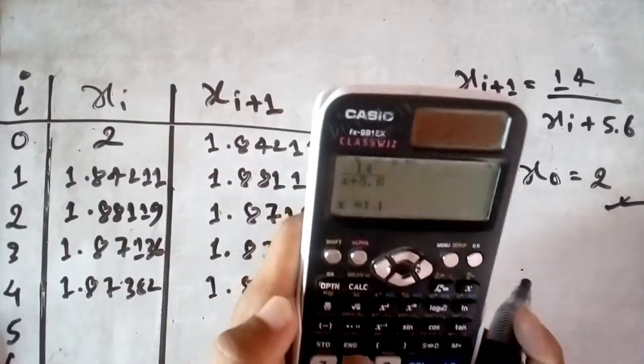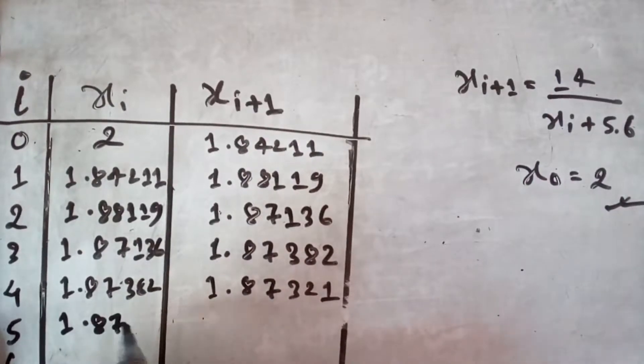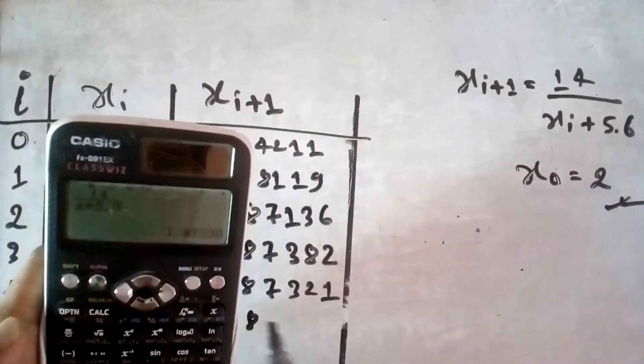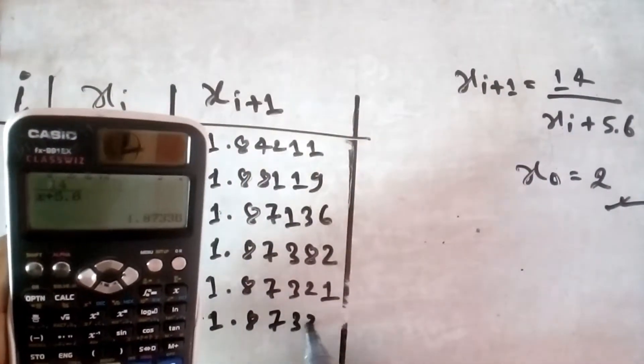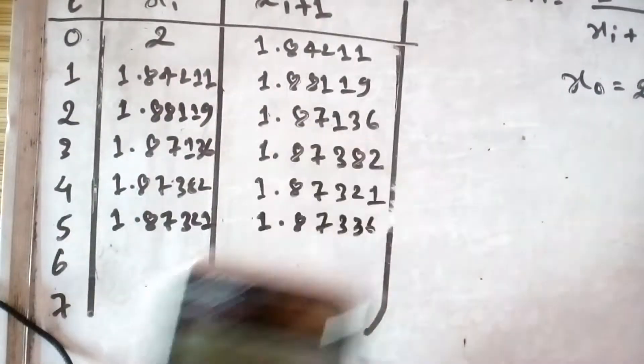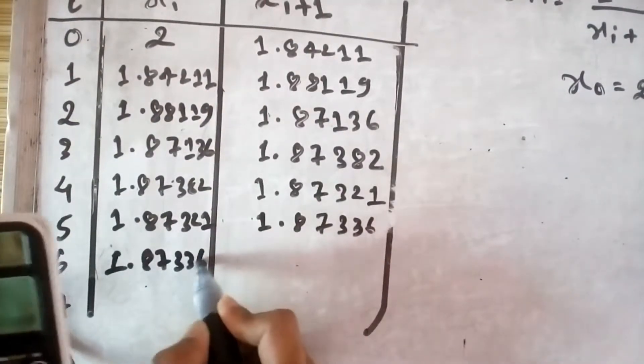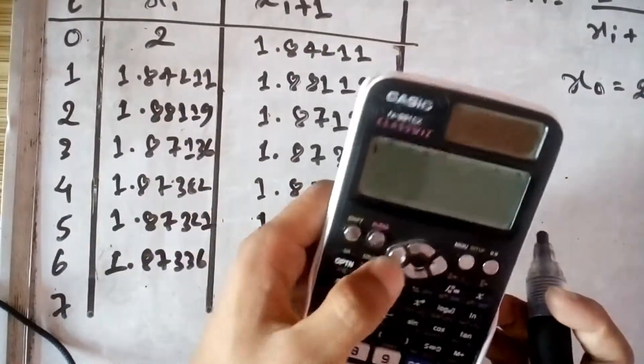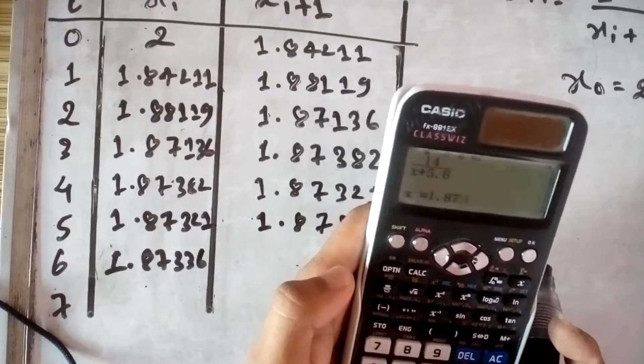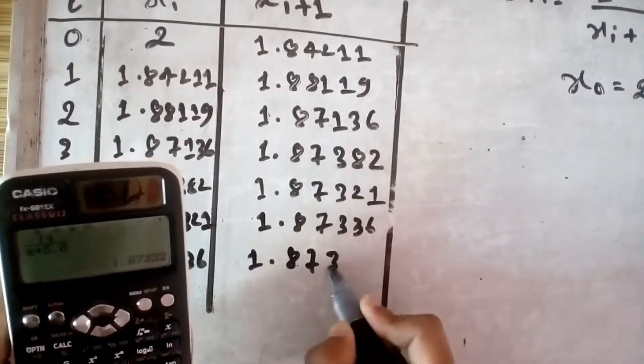1.87321, first write it here 1.87336. Now write it here 1.87336, you get 1.87332.